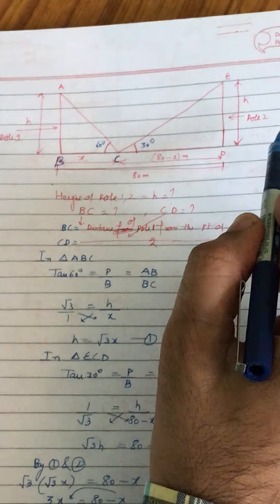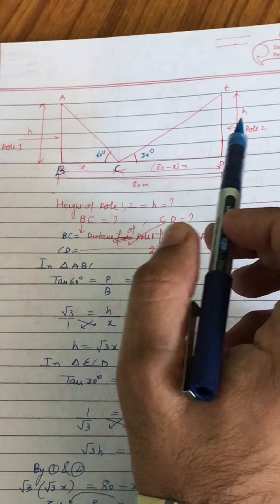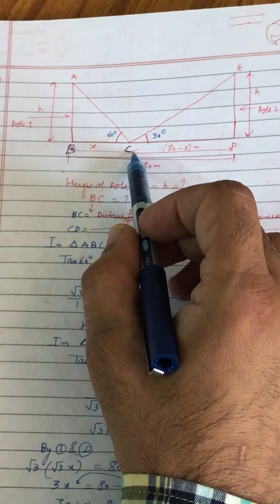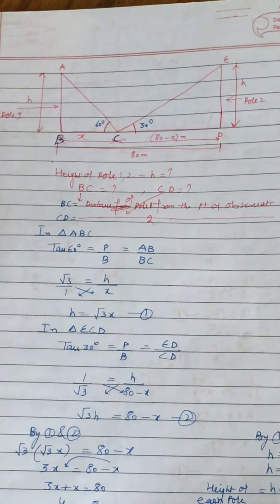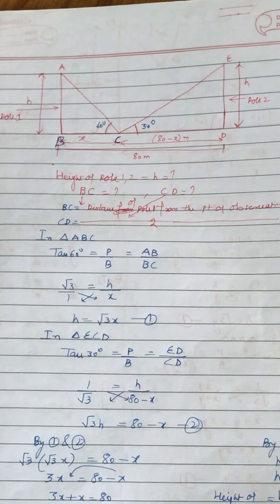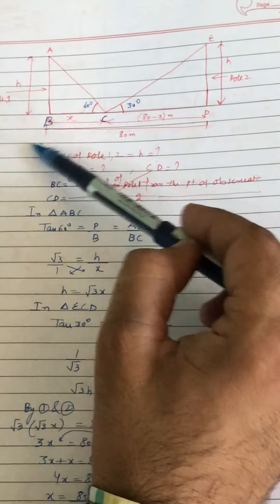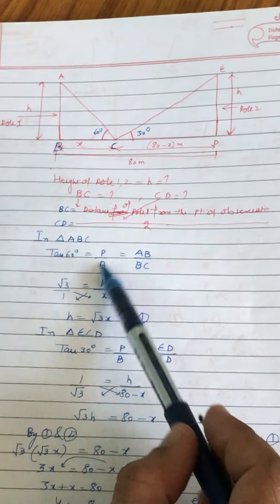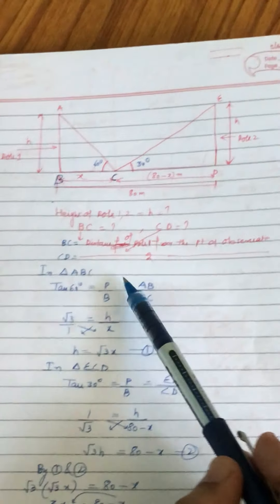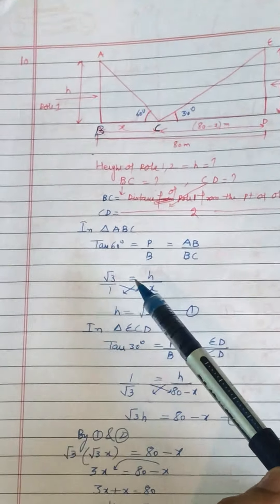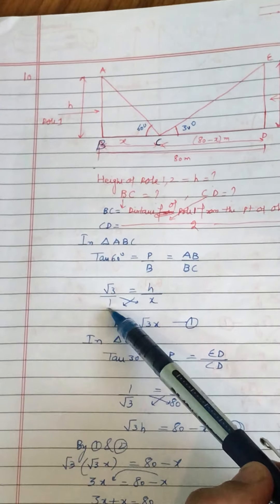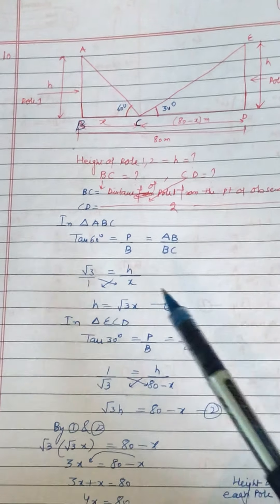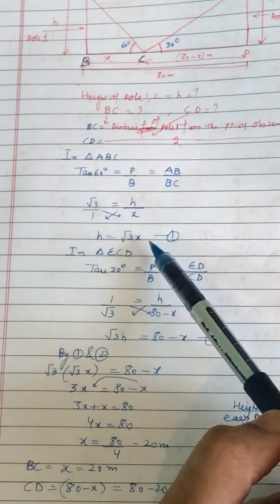In triangle ABC, tan60° equal to P upon B, equal to AB by BC. tan60° ki value root 3, AB ki jagah small h, aur BC ki jagah x put kijiye. Cross multiply kijiye — pehli equation: H is equal to root 3 x. Iske baad doosra triangle ECD mein lagaiye tan30° equal to P upon B — perpendicular ED, and base CD. tan30° equal to ED by CD, 1 by root 3 equal to h upon (80 minus x). Cross multiply: root 3 h equal to 80 minus x.